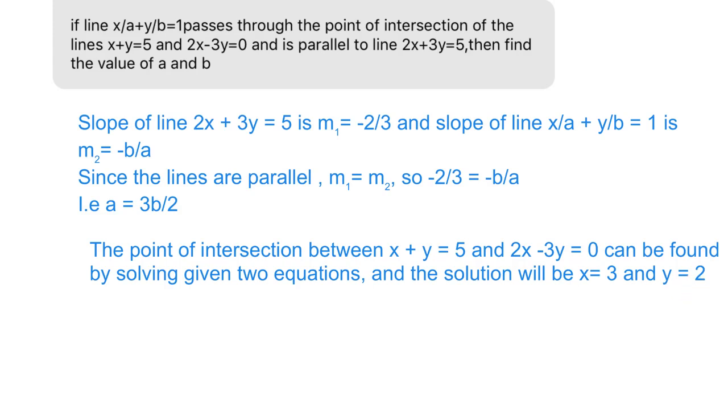Now we're going to find the value of a and b. We have the equation x/a + y/b = 1, and this line passes through the point of intersection. That means we can use x = 3 and y = 2 in the given equation, and also use a = 3b/2. So in the next step I'll use these values to find a and b.